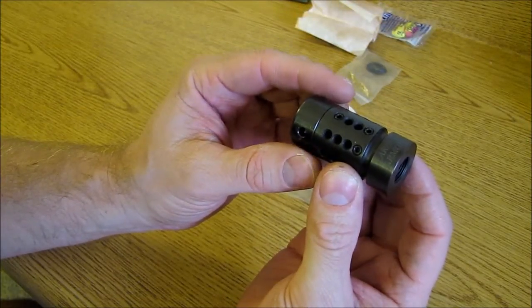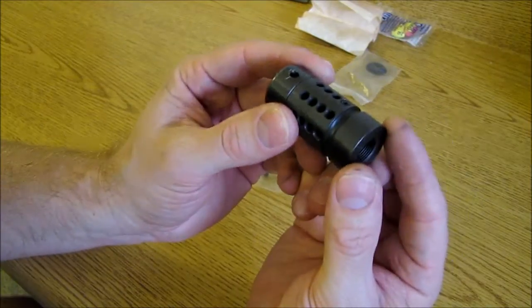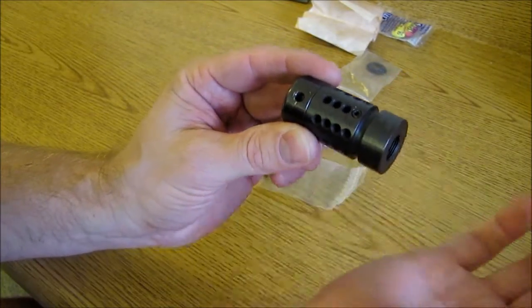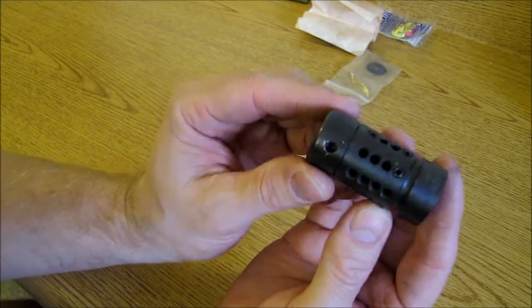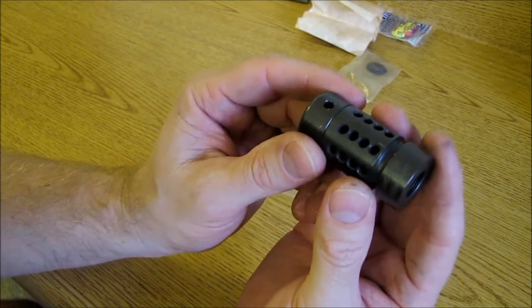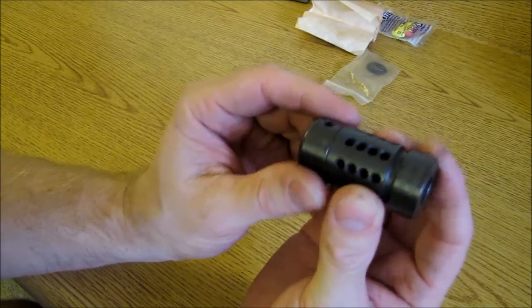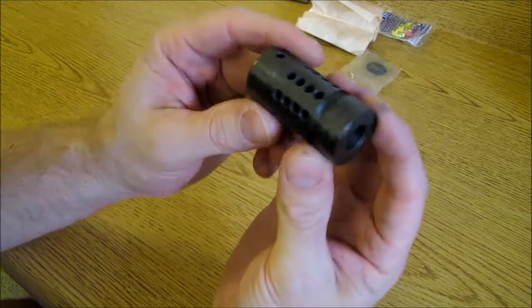Now, it is kind of plain Jane looking in that it's not conformal with the barrel. Now, a bull barrel or something like that, this would butt up nice and tight and it would be nice and conformal with the barrel. But this one kind of flares out and sticks out there a bit. But ultimately what I'm concerned about is the way that it performs. It does have a lot of forward weight, about five ounces of forward weight.